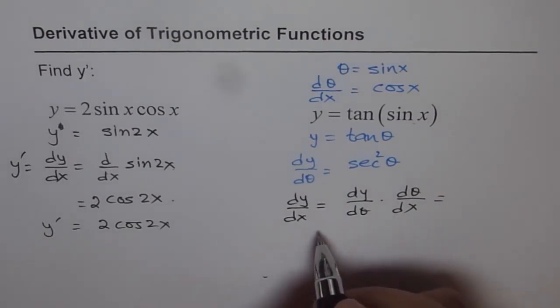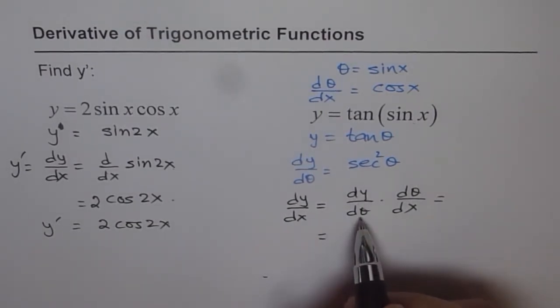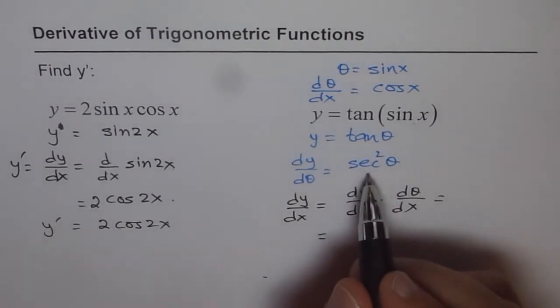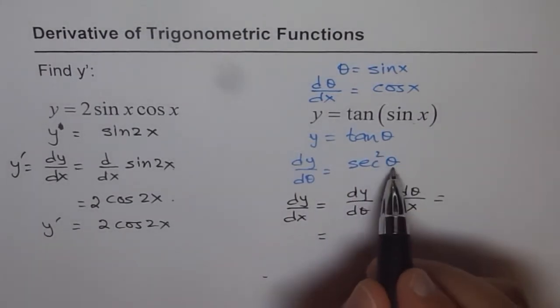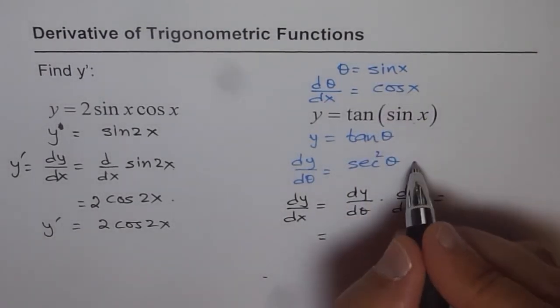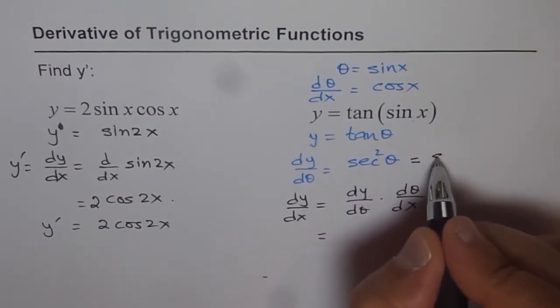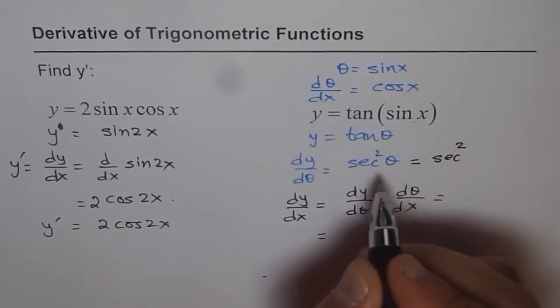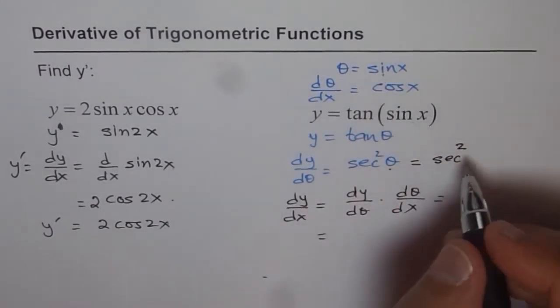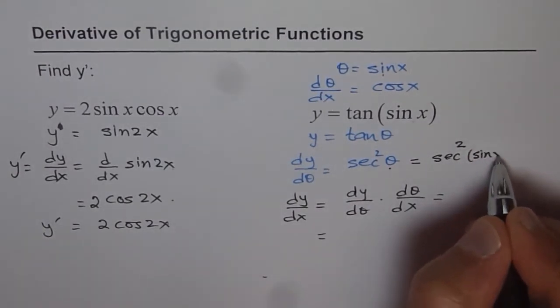So, we can write down the answer right here now. So dy d theta is secant square theta. And what is theta? Theta is sin x. In fact, let me first write here. So if we have here secant square instead of theta, I will write sin x. Do you understand?